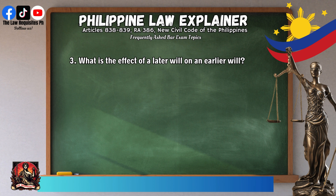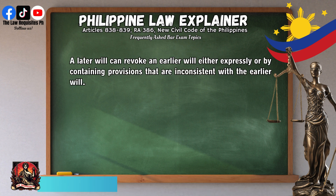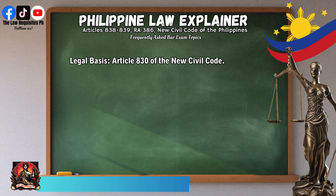Question 3: What is the effect of a later will on an earlier will? A later will can revoke an earlier will either expressly or by containing provisions that are inconsistent with the earlier will. Legal basis: Article 830 of the New Civil Code.